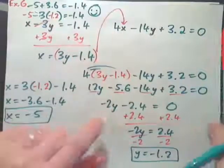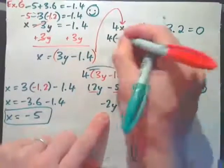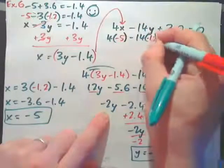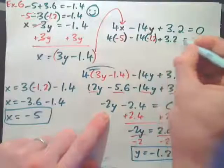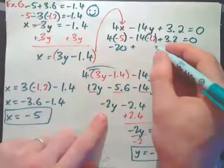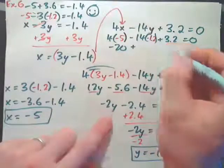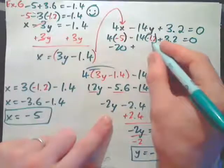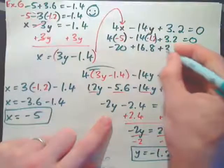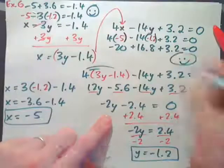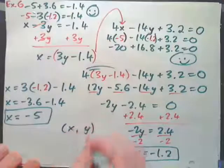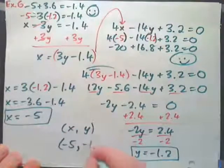Also verify in the second equation: 4 times negative 5 minus 14 times negative 1.2 plus 3.2 equals zero. That is negative 20 plus 16.8 plus 3.2, which equals zero. Both equations confirmed. The solution in ordered pair form is (x, y) equals (negative 5, negative 1.2).